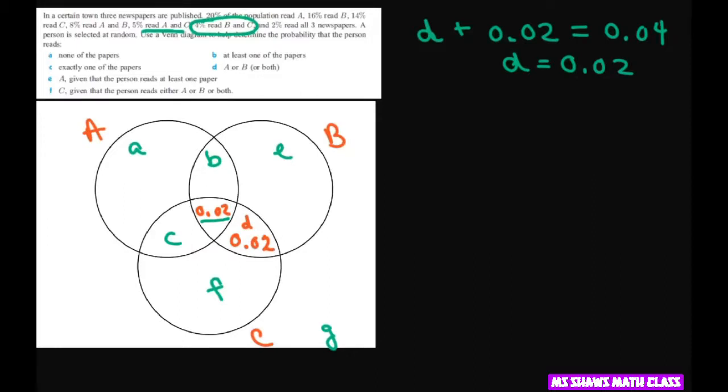Now what does it say for we're working backwards here? So now it says 5% read A and C. So A and C is 5%. Well that's these two that read both of them. So you're going to write C plus 0.02 equals 5%. So C equals 0.03. So let's write that in 0.03.